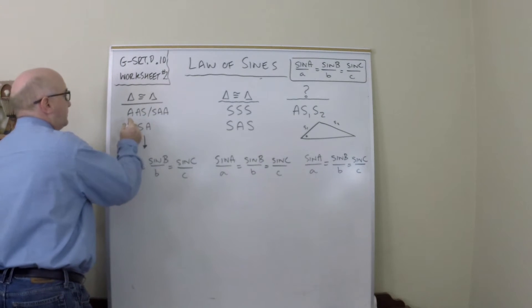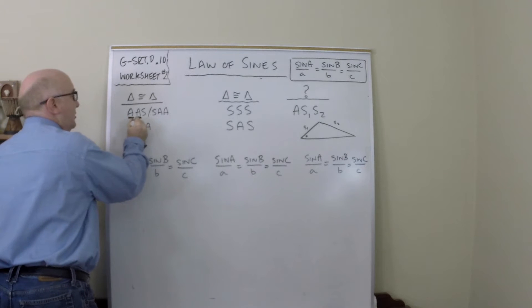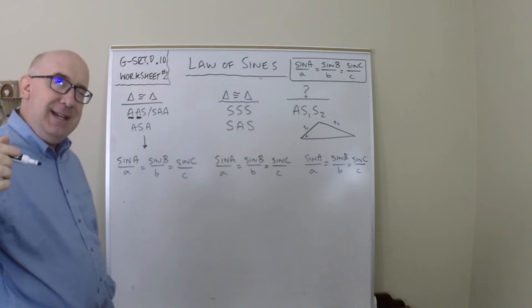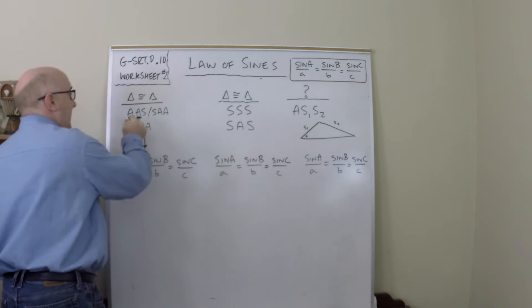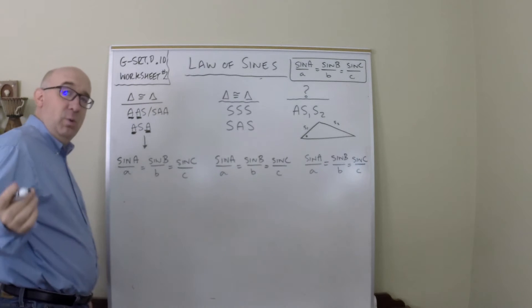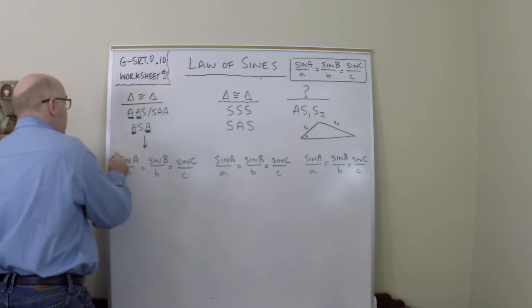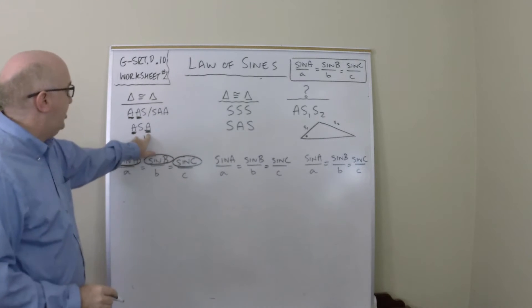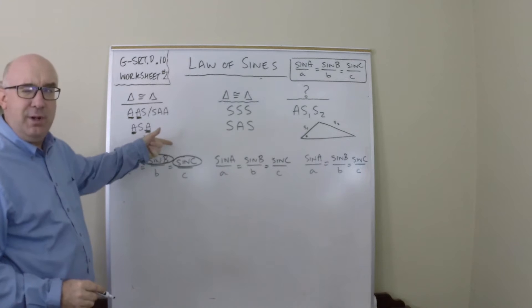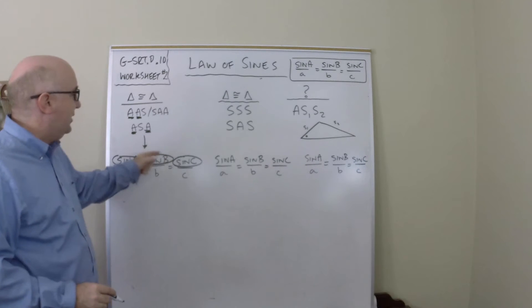The reason it works so well is if you have two angles, you actually would have the third angle for free. Really, when I give you two angles and a side, no matter the order I give them to you, you would obtain all three angles because the two angles give you the third one for free.